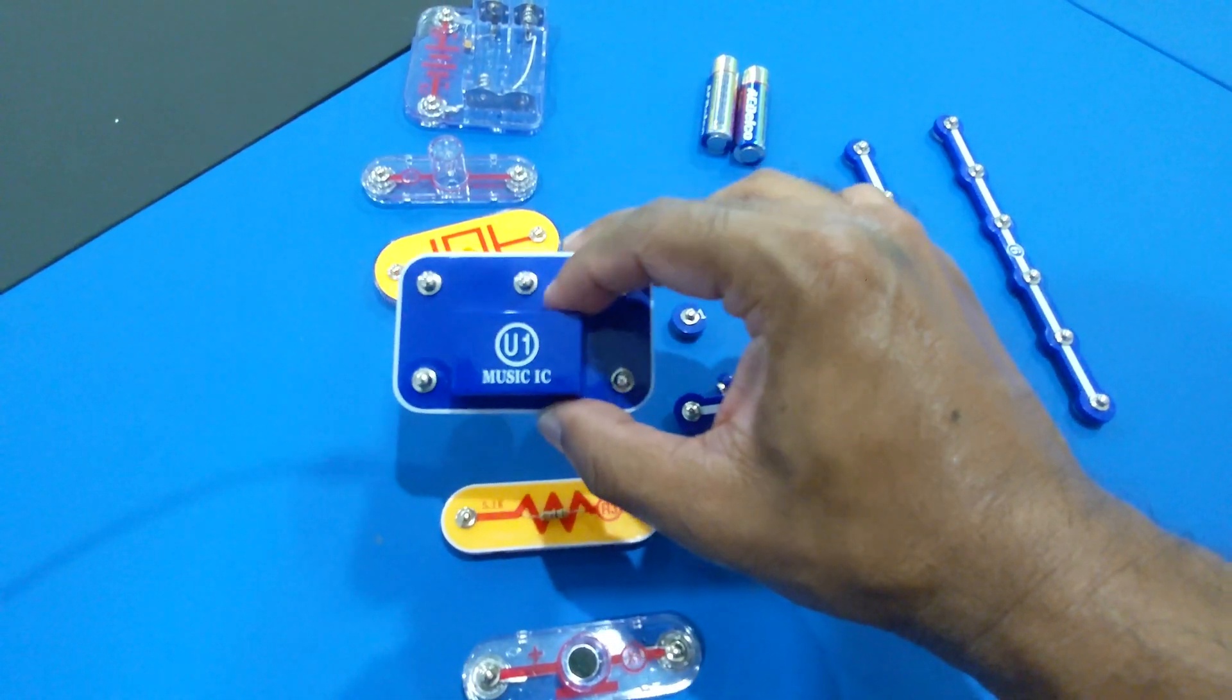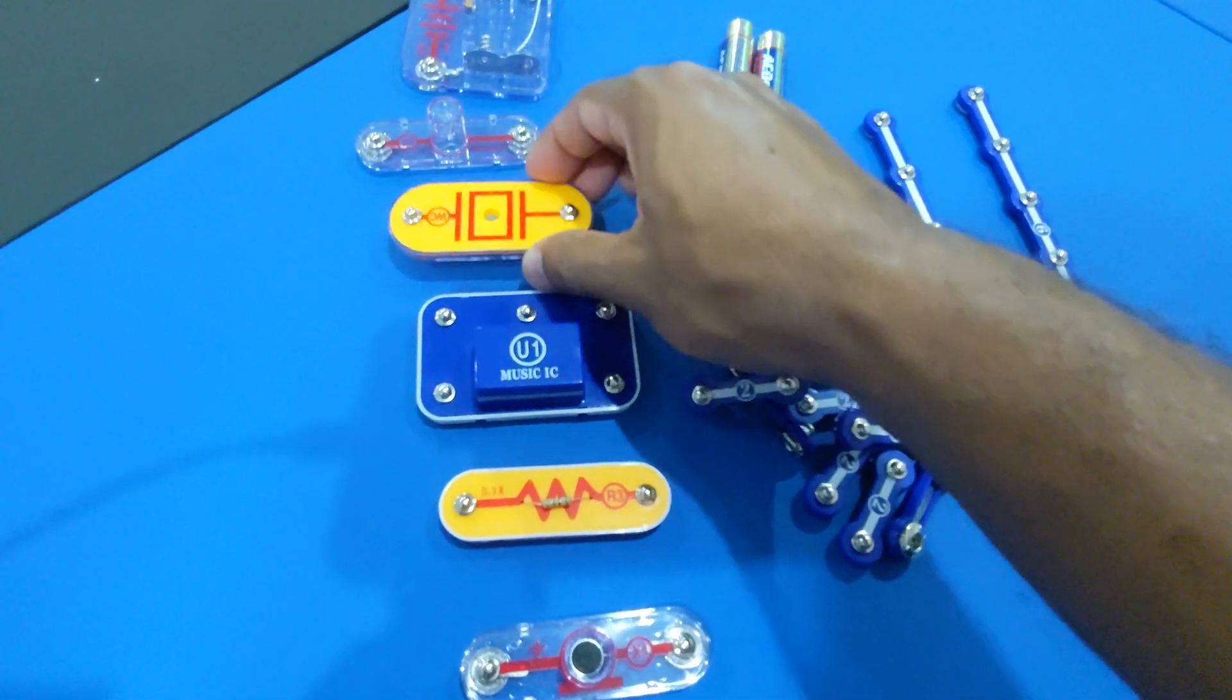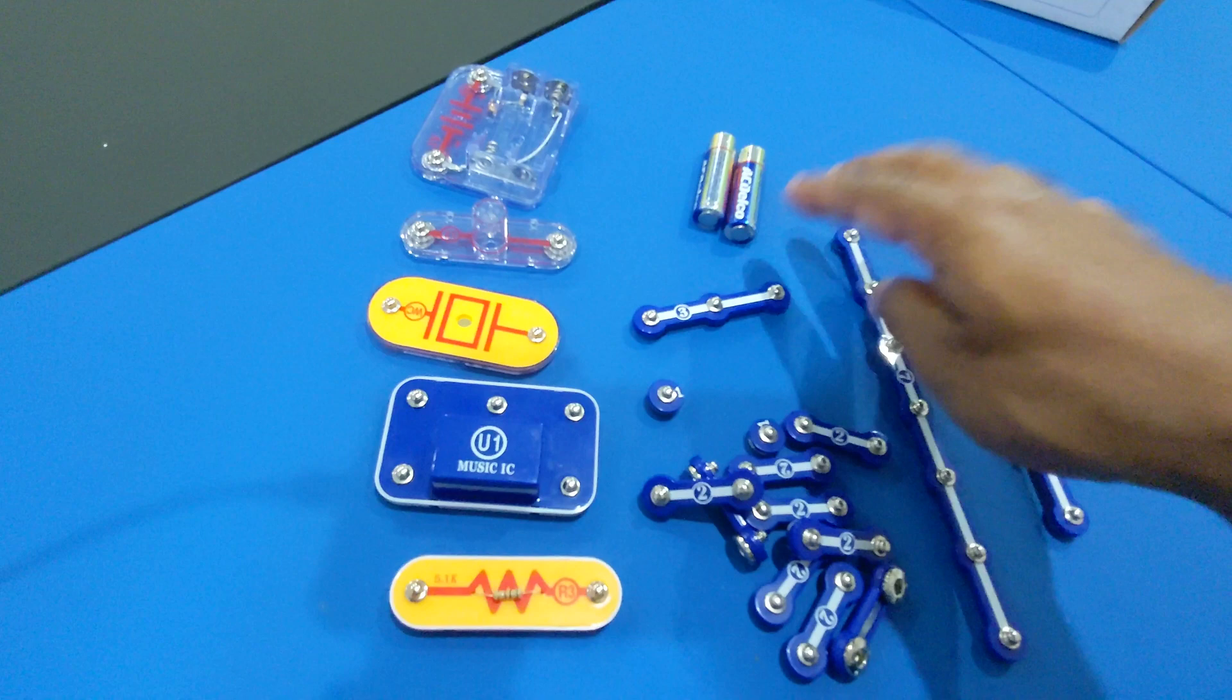The music integrated circuit, this is what makes the music, a whistle chip that's also going to make some sound, a lamp that's going to light up, battery holder and batteries.